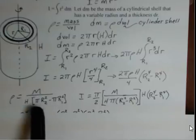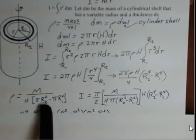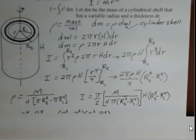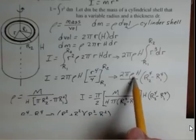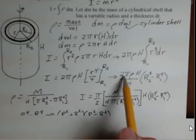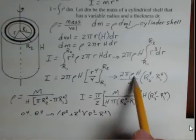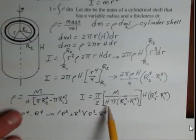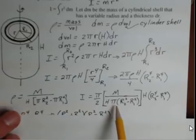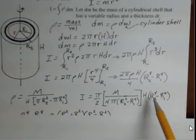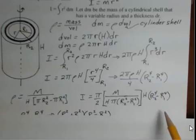So we're going to take this rho definition, and we're going to drop it in here for the density in our formula for rotational inertia. So the 2 and the 4, that simplifies to a 2. So pi over 2, and then for rho, we put in m over h pi r2 squared minus r1 squared. Then we have h, and then we have r2 to the fourth minus r1 to the fourth.